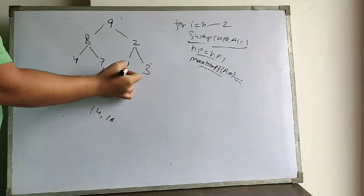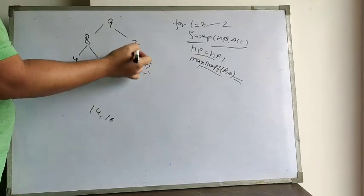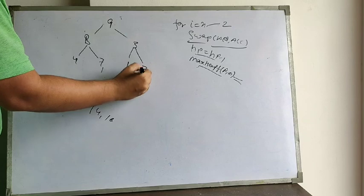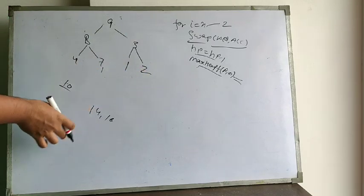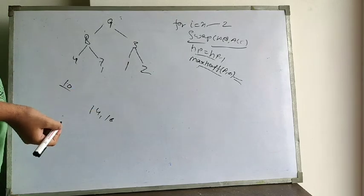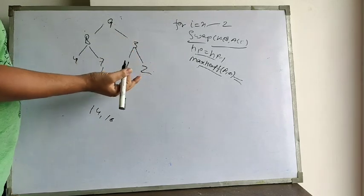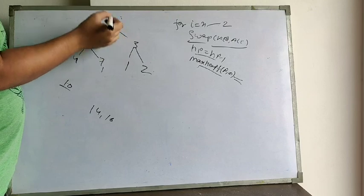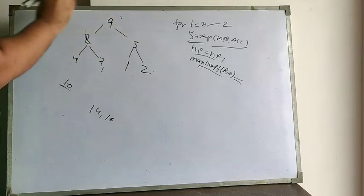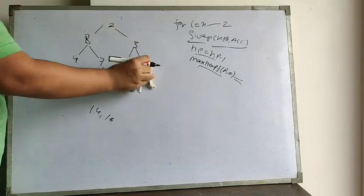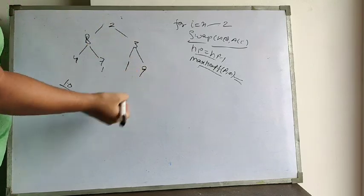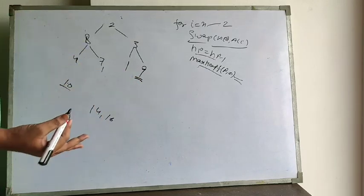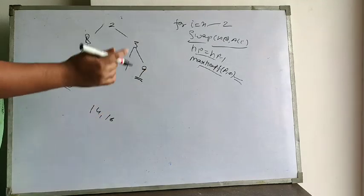Among the remaining three elements, 3 is the biggest so 3 moves up and 2 stays below. This is again a heap. We exchange the last heap element with the first — 2 moves up and 9 moves to the last position. We extract 9. 9 will remain at this position within the array — we are not moving it anywhere else.